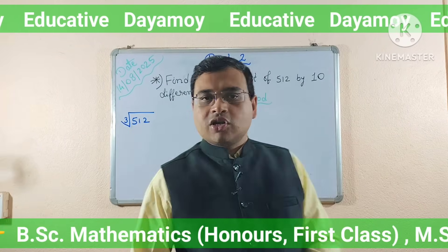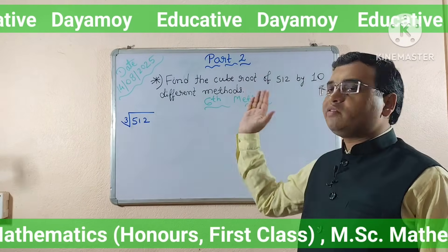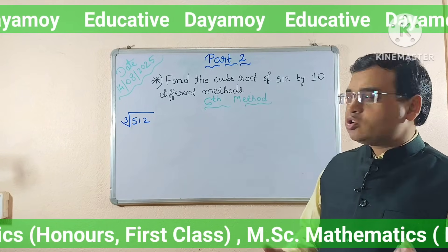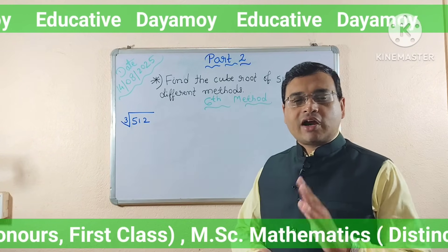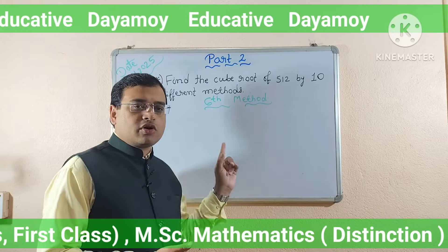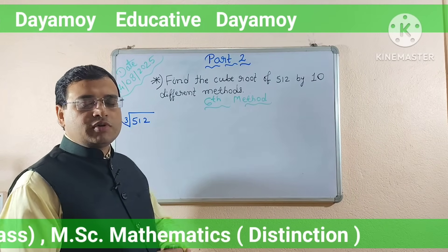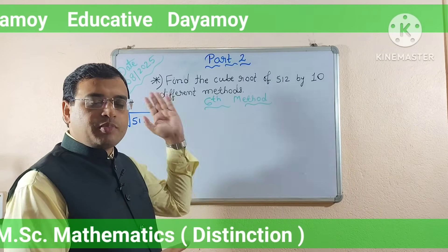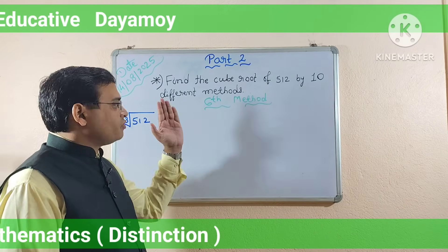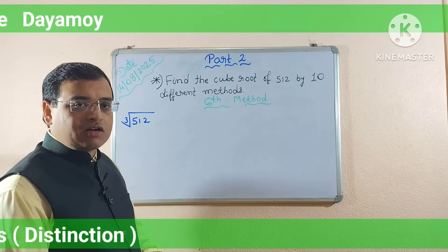Today's topic is to find the cube root of 512 by 10 different methods. If you have seen my previous video on cube root of 512, that was part 1. This video is the second part. Today I will teach you from the sixth method onwards. So let's start.